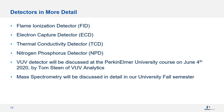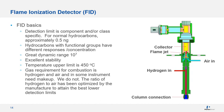The flame ionization detector, or FID, is one of the most popular detectors. It shows high sensitivity to most organic components, but when heteroatoms are present in the analyte molecules the sensitivity is much reduced. It is a very stable detector. Some specifications include high sensitivity, large dynamic range, low noise, and a maximum temperature of 450 degrees Celsius. When going to this temperature, we need to ensure our analytical column's stationary phase is capable of functioning at that temperature and will not degrade.